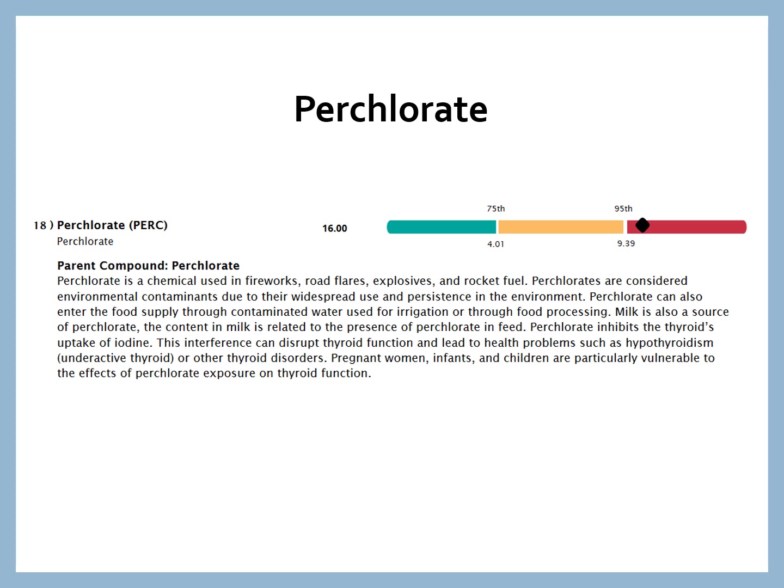Perchlorate is a compound that can be found in many municipal water supplies. It can come from fireworks, explosives, and even rocket fuel, interestingly enough. One of the things it does is it inhibits thyroid function. This is particularly concerning for a pregnant woman, where perchlorate can actually be an inhibiting factor to thyroid development in a developing child.